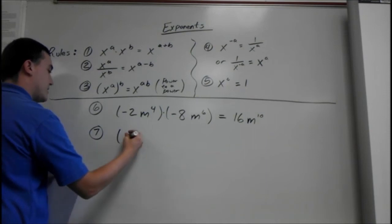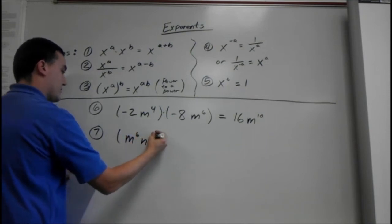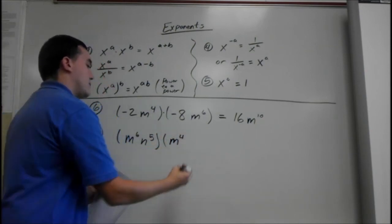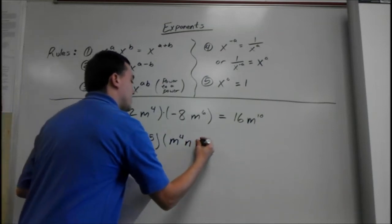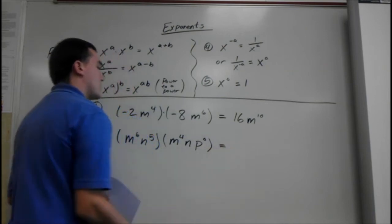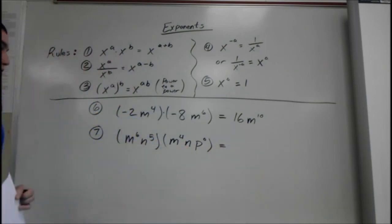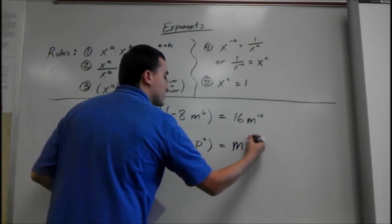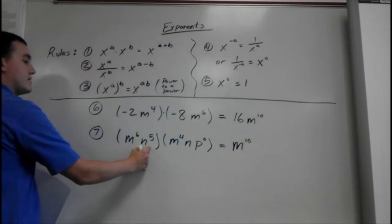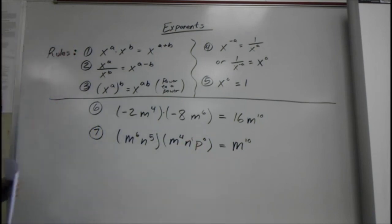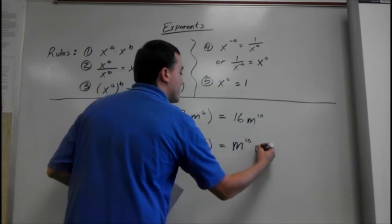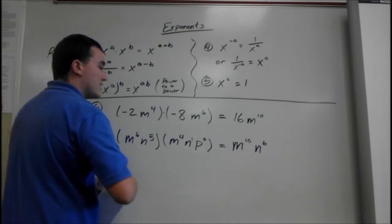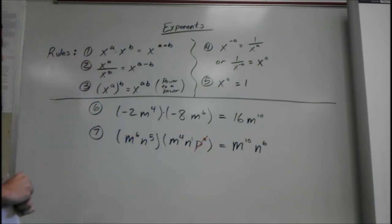We have m to the sixth times n to the fifth times m to the fourth and p to the zero. These are all multiplying and we only combine terms with the same base. For the m's: m to the sixth times m to the fourth — add the exponents, we get m to the tenth. For n: n to the fifth times n to the first is n to the sixth. And p to the zero is just one, so we don't need it.